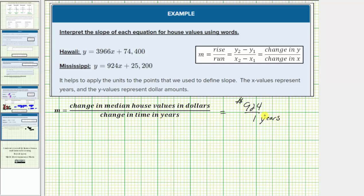So because the slope is positive, this tells us in Mississippi, the median home value is increasing by 924 dollars per year. Let's write this as a sentence. We know the home values are increasing because the slope is positive. If it was negative, the home values would be decreasing.